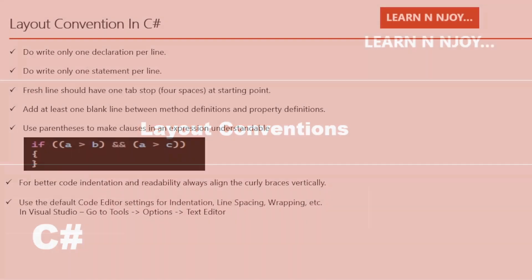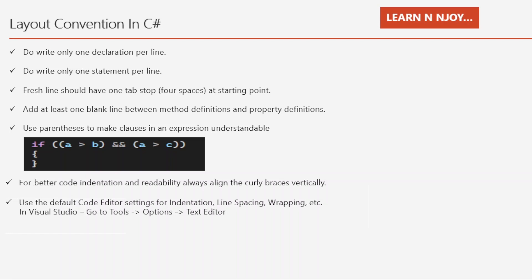Layout conventions in C#. Number one: write only one declaration per line. Number two: write only one statement per line. Number three: indent lines with one tab stop, which is four spaces, at the starting point. Number four: add at least one blank line between method definitions and property definitions.